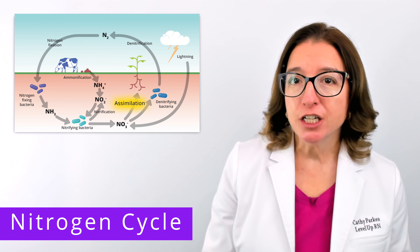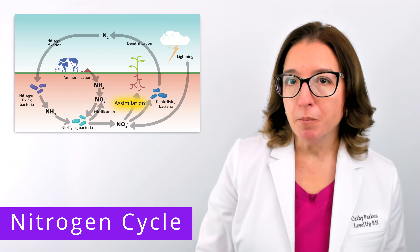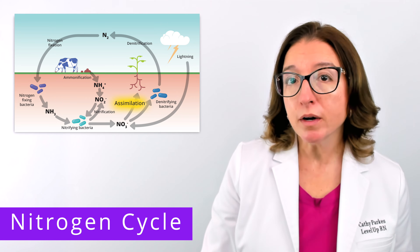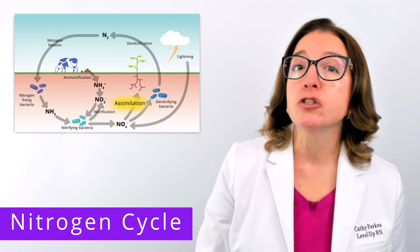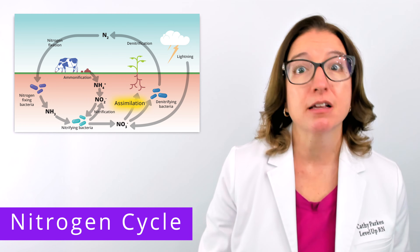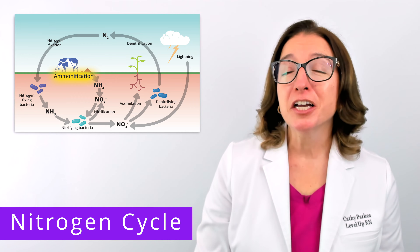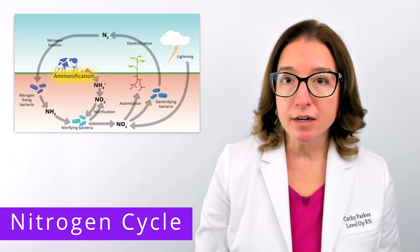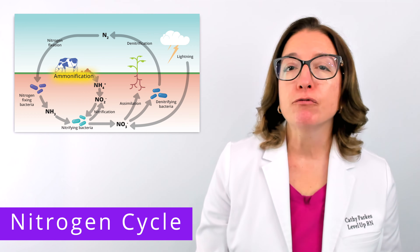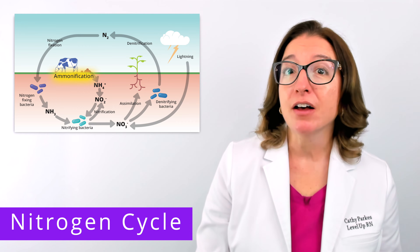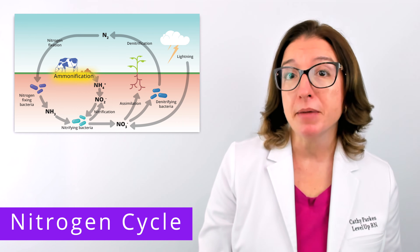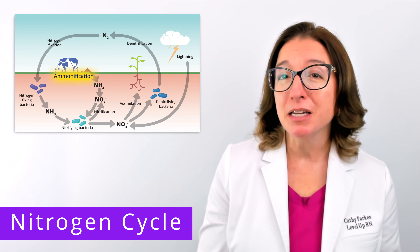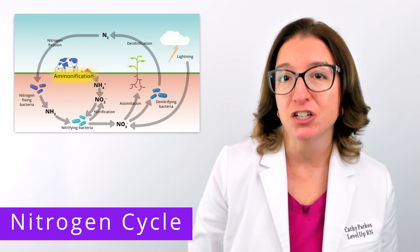During assimilation, inorganic nitrogen compounds such as nitrates are taken up by plants and other organisms and converted into organic nitrogen compounds, such as amino acids. During ammonification, decomposers such as prokaryotic organisms and fungi convert organic nitrogen found in waste products and in the remains of dead organisms into ammonia, which can then be converted into nitrates via nitrification.